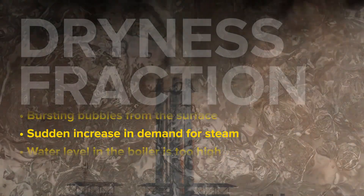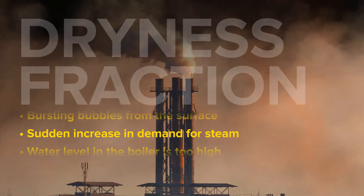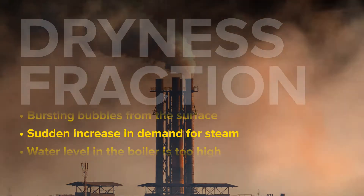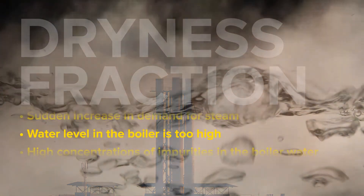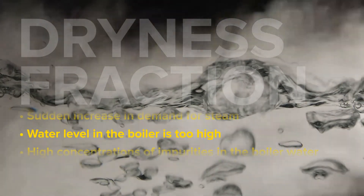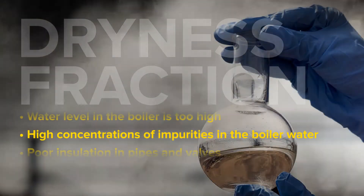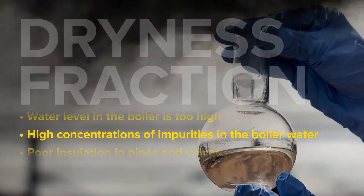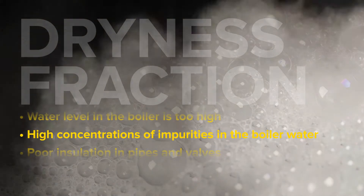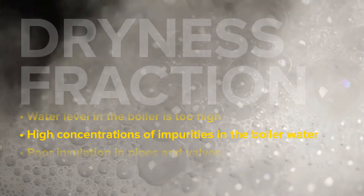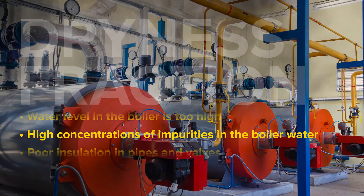Or, if there is a sudden increase in demand for steam, that reduces pressure above the water, lowering the boiling point and increasing the violence of bubbling. This is sometimes called priming or carryover. Other forms of carryover include water in the system because the water level in the boiler is too high, or high concentrations of impurities in the boiler water that reduce the surface tension and increase agitation of the water's surface. Impurities can also cause the formation of a stable foam above the water's surface, causing slugs of water to be intermittently discharged from the boiler along with the steam.